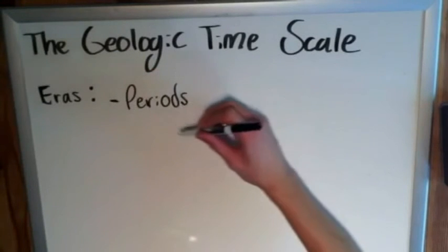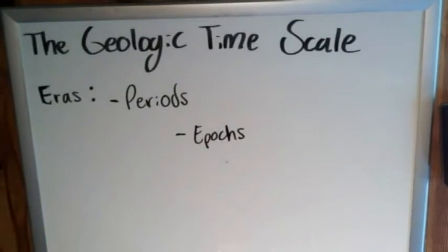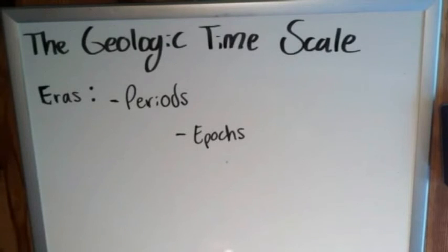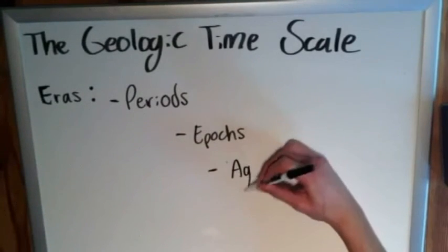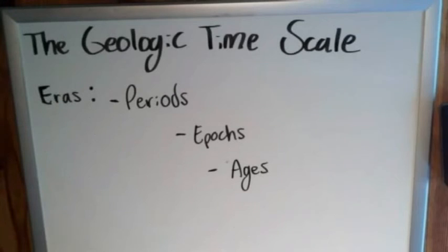Below periods there are epochs, which are generally much less important. Sometimes people don't even go further than periods and instead describe upper or lower periods — such as the upper Cambrian, lower Cambrian, or early or late Cambrian — rather than going further into epochs. And then below epochs we have ages.